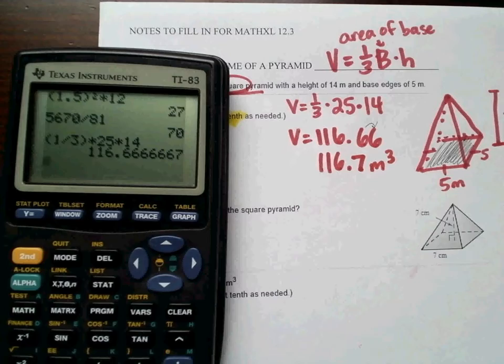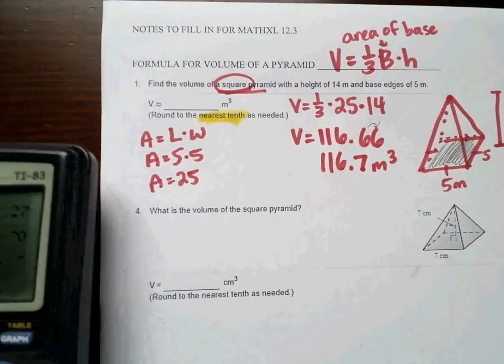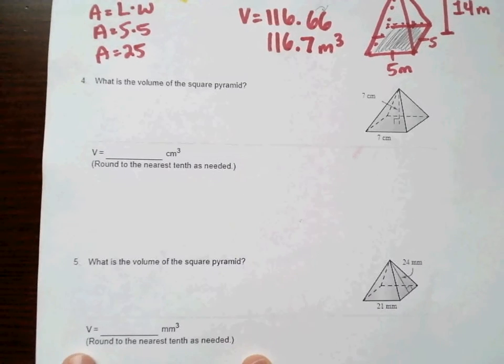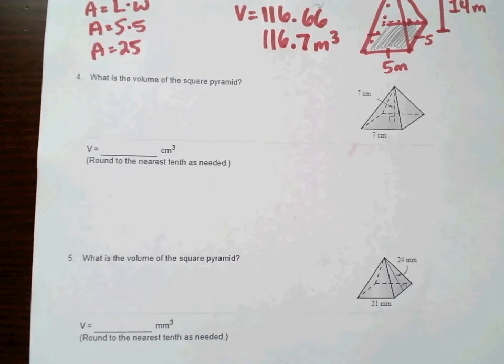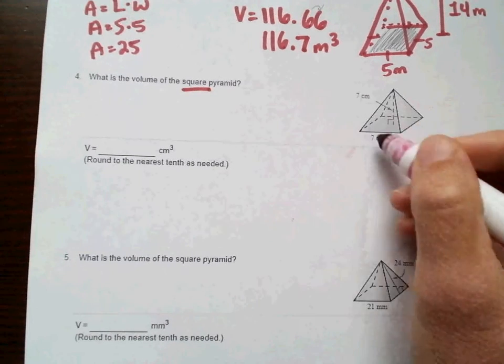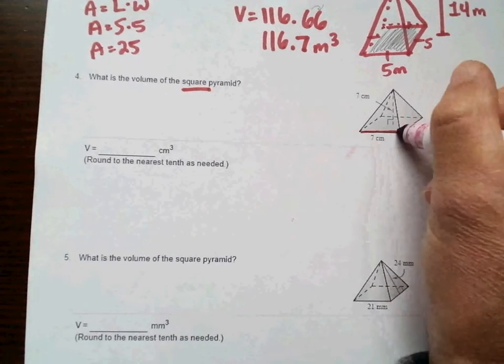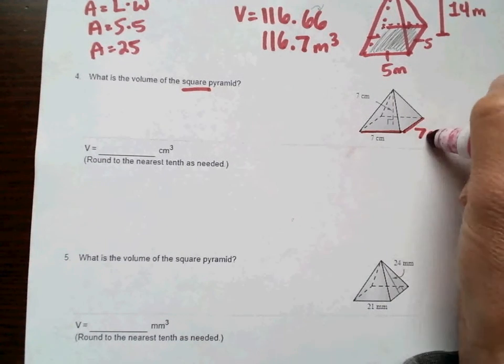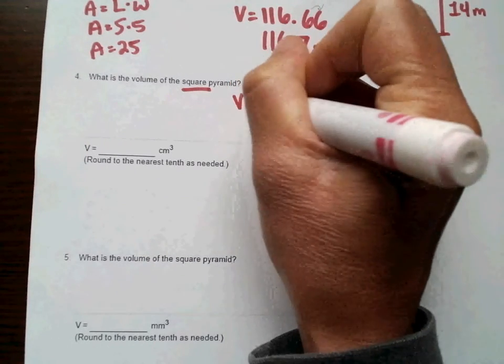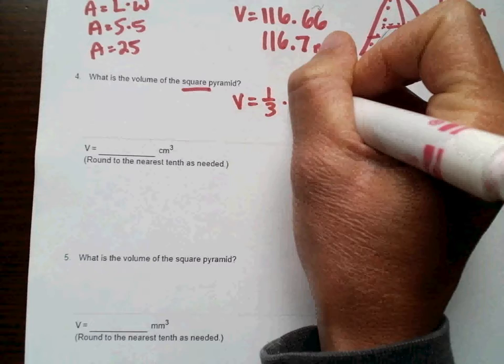The rest of these are going to follow along, just like that one. This is similar to number 4 on MathExcel. We have a square pyramid again. So, here's our dimensions. If this is 7 here, then I know that's 7, because they just told us it's a square pyramid, so the base is a square. So, volume equals one-third times area of the base times the height.